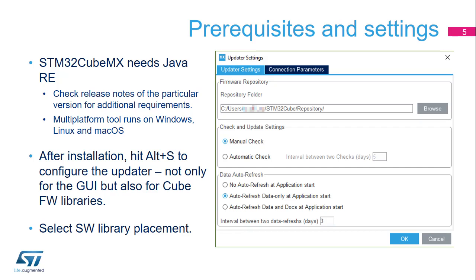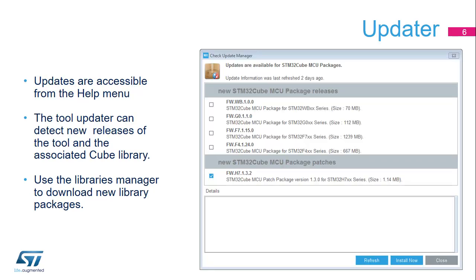If the internet connection is configured correctly, the tool can update itself as well as the code libraries used for generating the project workspaces. Use the Install New Libraries option (Alt+U) to download additional STM32Cube libraries or retrieve older versions for interoperability reasons. Note that the STM32CubeMX tool is not tested with all historical library releases, and new library releases may not work correctly with old tool versions.